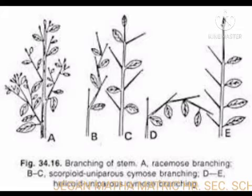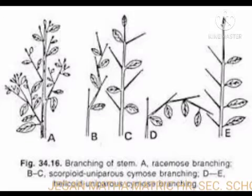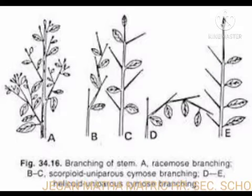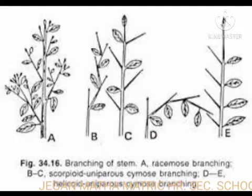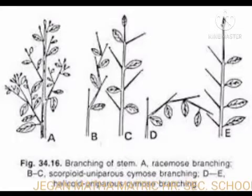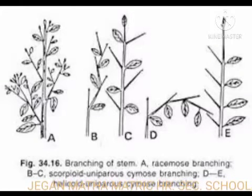Stem branching pattern is determined by the relative activity of apical meristem. The mode of arrangement of branches on a stem is known as branching. There are two main types: lateral branching and dichotomous branching.